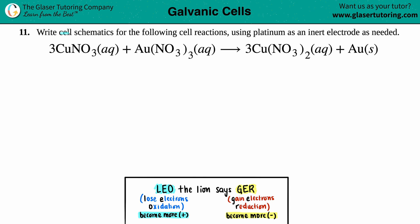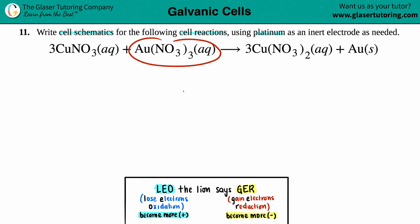Number 11: write cell schematics for the following cell reactions using platinum as an inert electrode as needed. We have our balanced equation: three Cu(NO3) aqueous plus Au(NO3)3 aqueous yields three Cu(NO3)2 aqueous plus Au solid. We have to draw our cell schematic, which is just a different representation of a balanced equation — a little scientific drawing in chemistry.